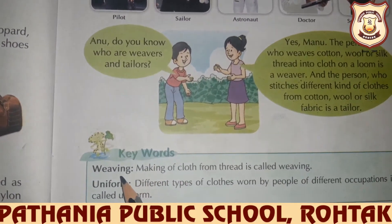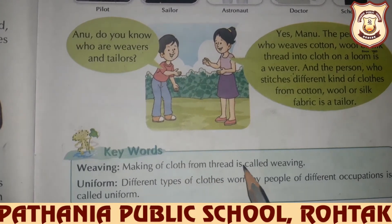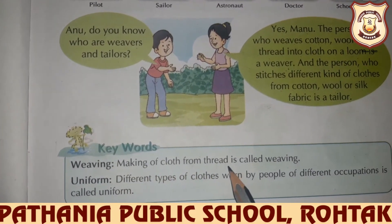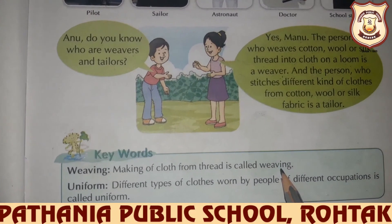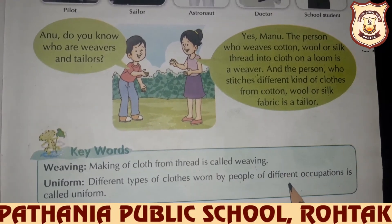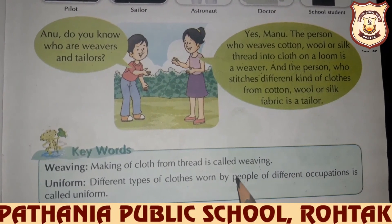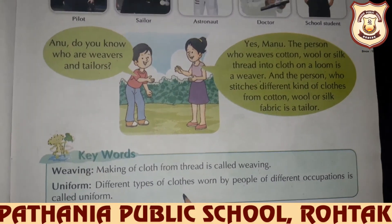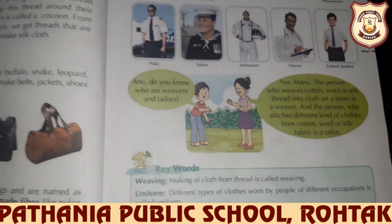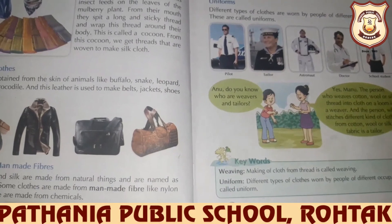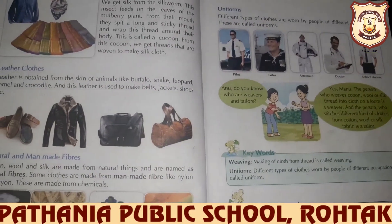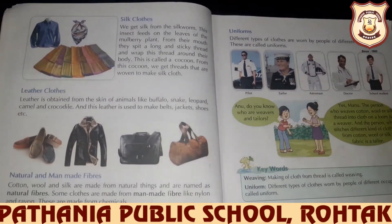Making of cloth from thread is called weaving. A uniform means different types of clothes worn by people of different occupations. We have completed this chapter. Today you will read page number 22 and page number 23. Read the chapter, take care, bye-bye.